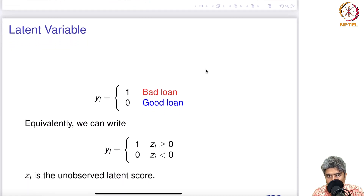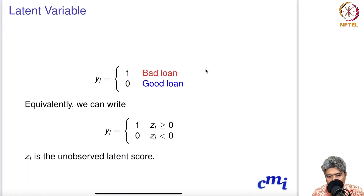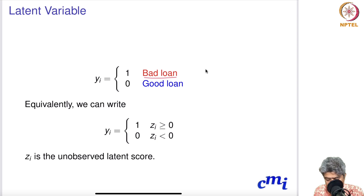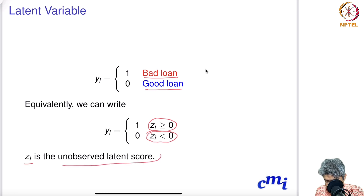To model this we bring in the concept of a latent variable. We define yi = 1 if zi ≥ 0, and yi = 0 if zi < 0. Here zi is some unobserved latent score, sometimes also known as a potential score.